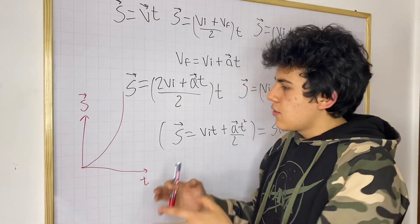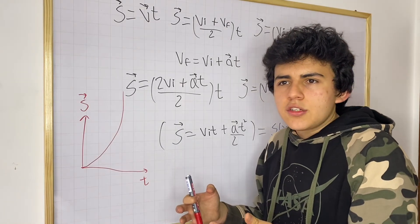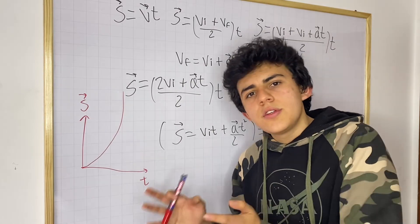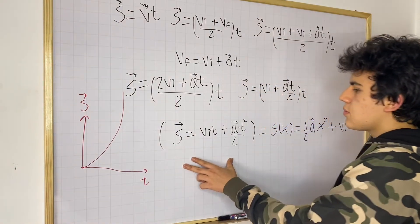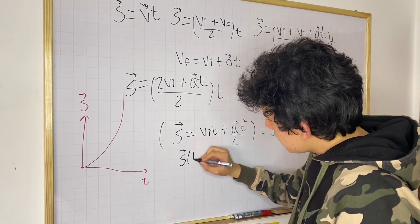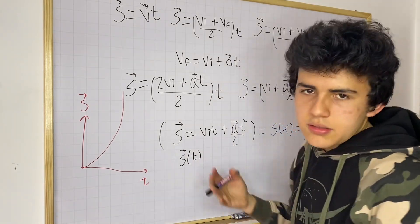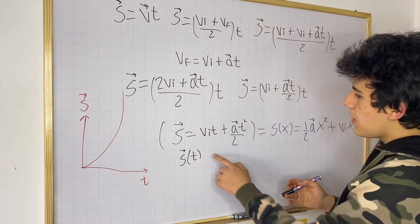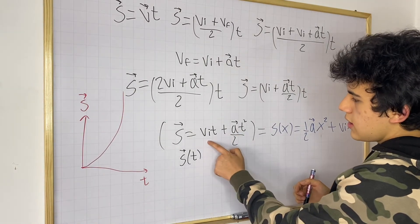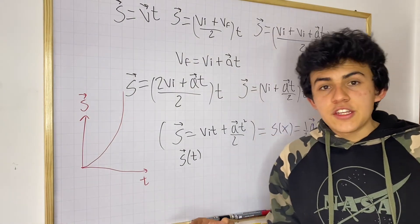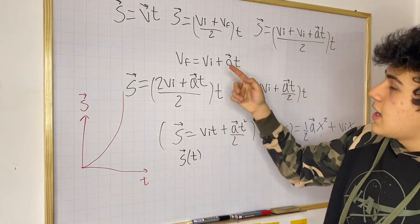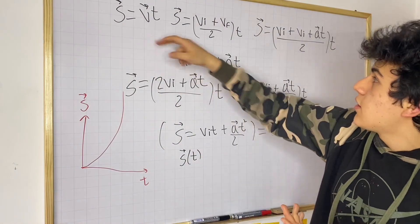You could also differentiate this equation to see how acceleration affects the rate of change of position, which is just velocity. This derivation is pretty cool — it shows that displacement is a function of time, a value that depends on time given some parameters and coefficients: a quadratic equation with acceleration and initial velocity.